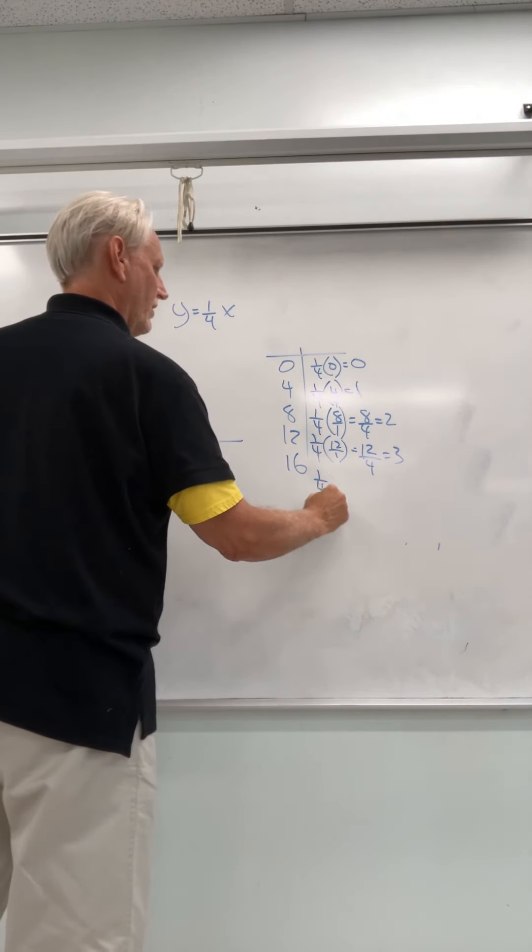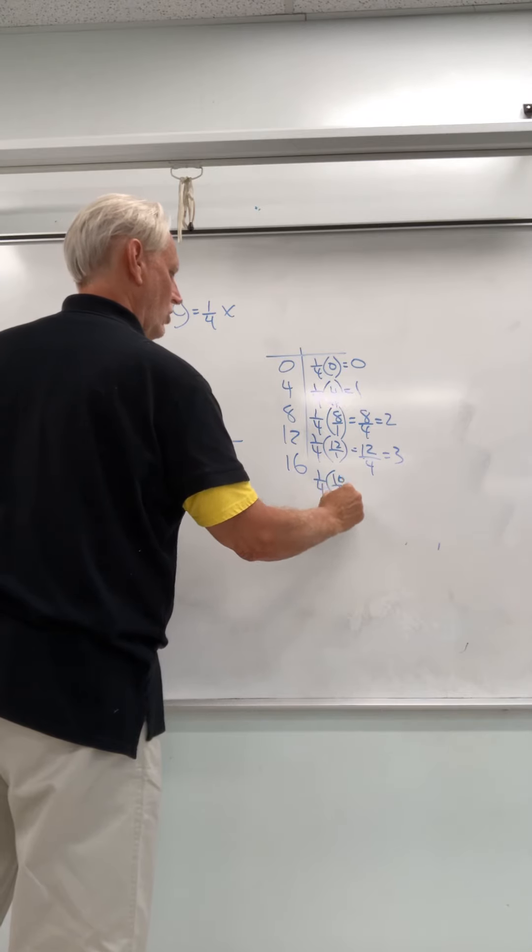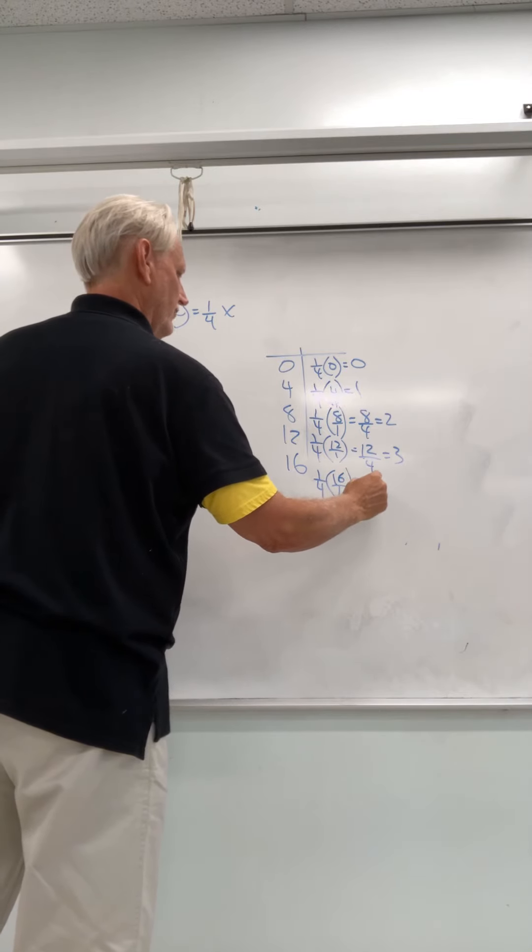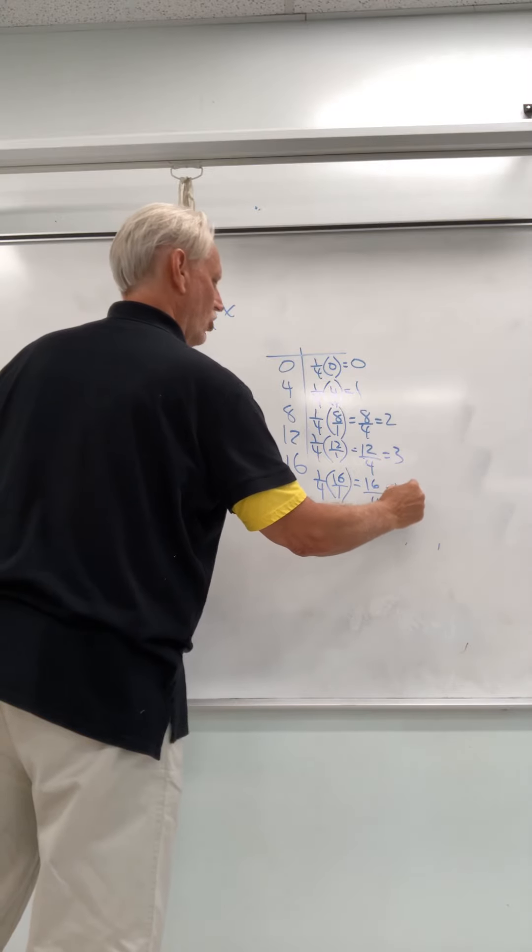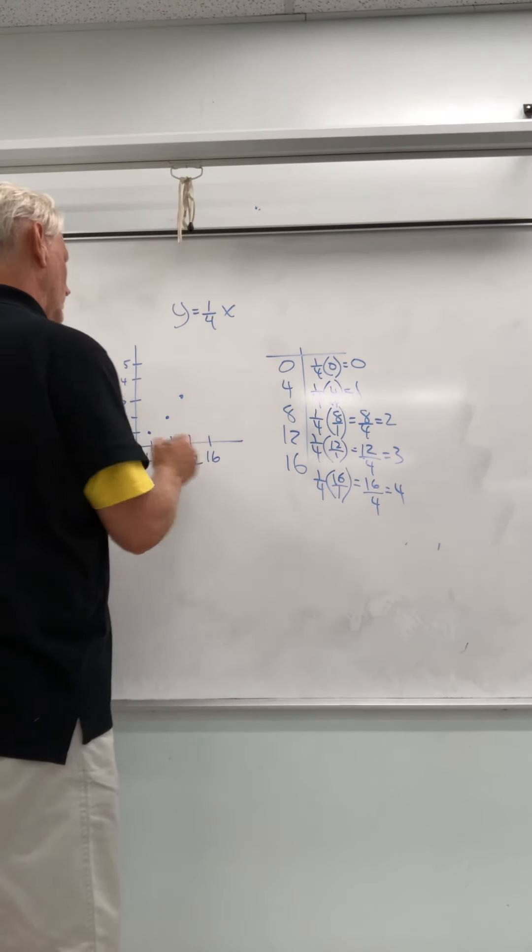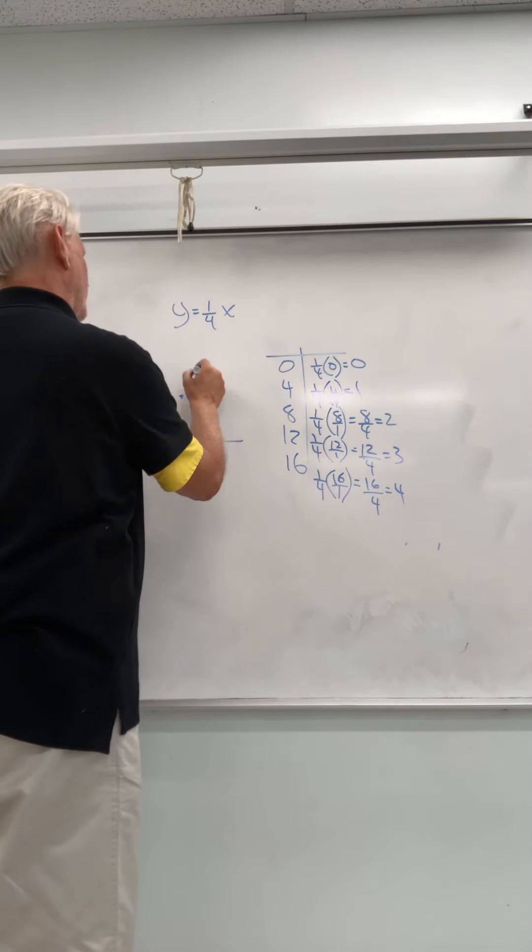And then 1 fourth times 16 over 1 is going to give you 16 over 4 or 4. Okay? So that's over 16, up 4, and that's my graph.